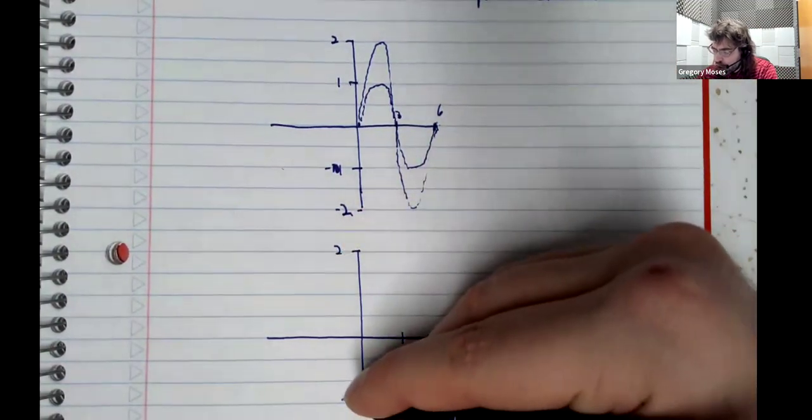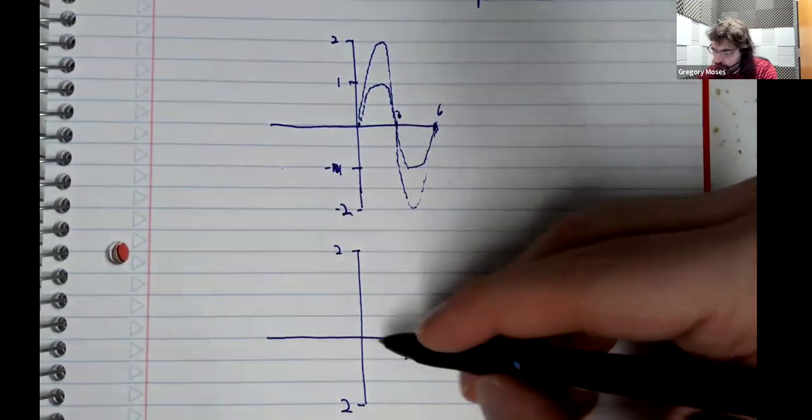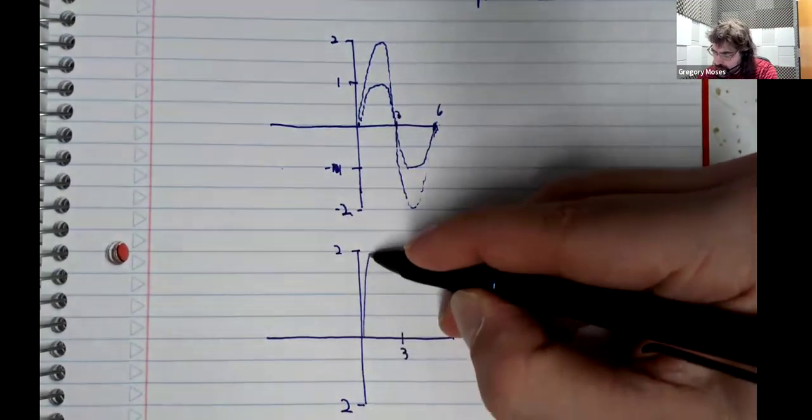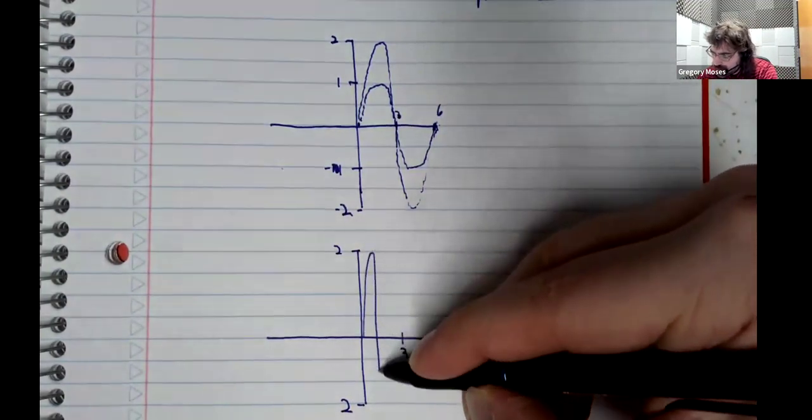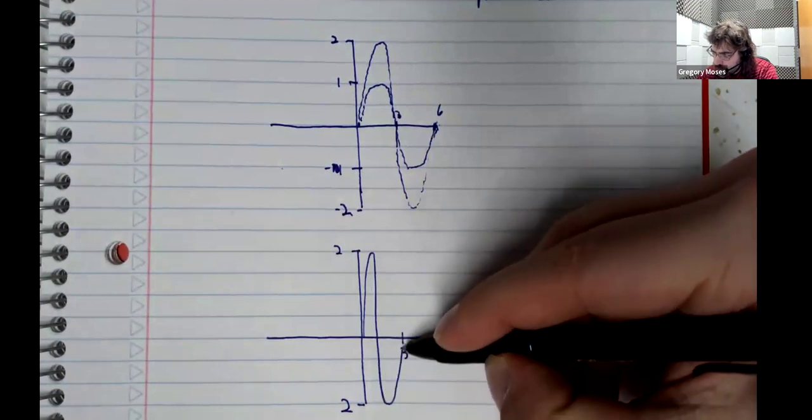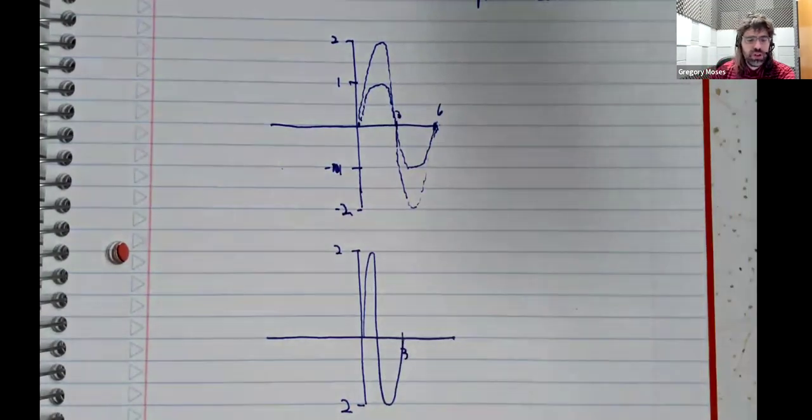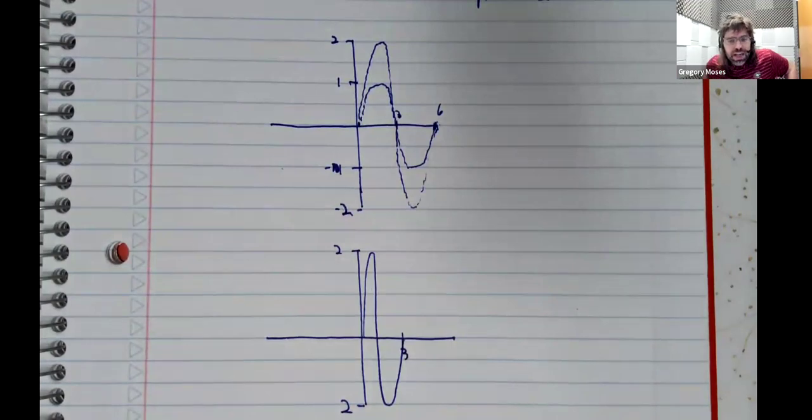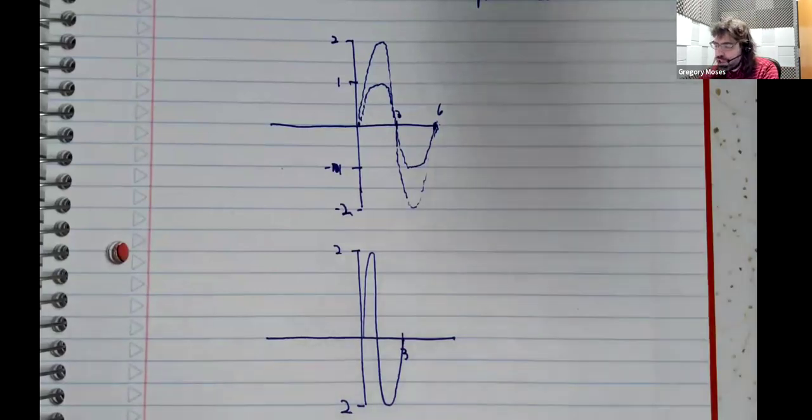Our new amplitude is two. So the graph so far with the adjusted amplitude and the adjusted period ought to look something like that. Now that's shifted.